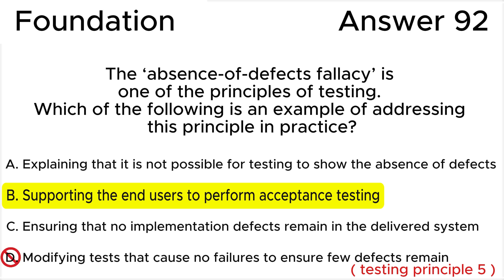Answer D is invalid because modifying tests that cause no failures to ensure few defects remain is one way to address the 'pesticide paradox' principle. This principle is concerned with the idea that repeating identical tests on unaltered code is unlikely to uncover novel defects, and therefore modifying tests may be essential. This will not validate that the system meets user needs and expectations. This answer deals with testing principle five.